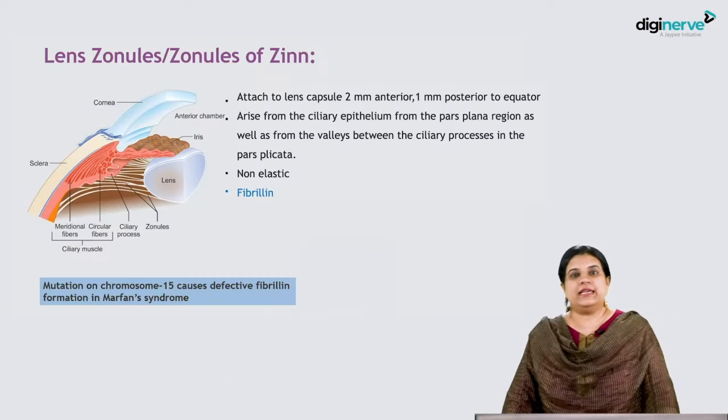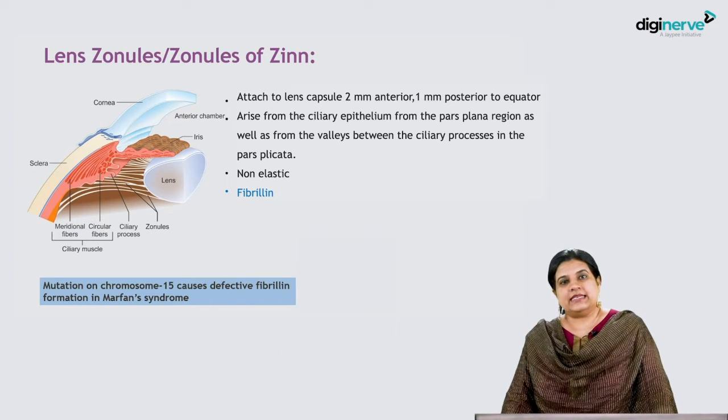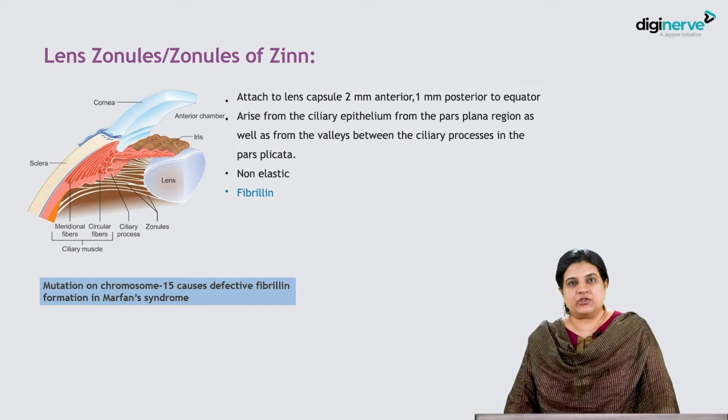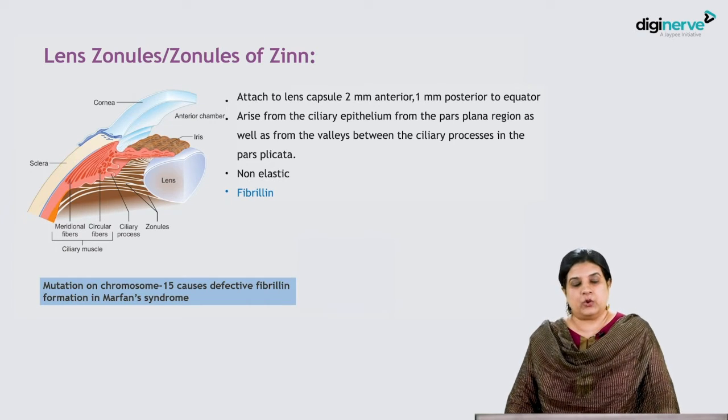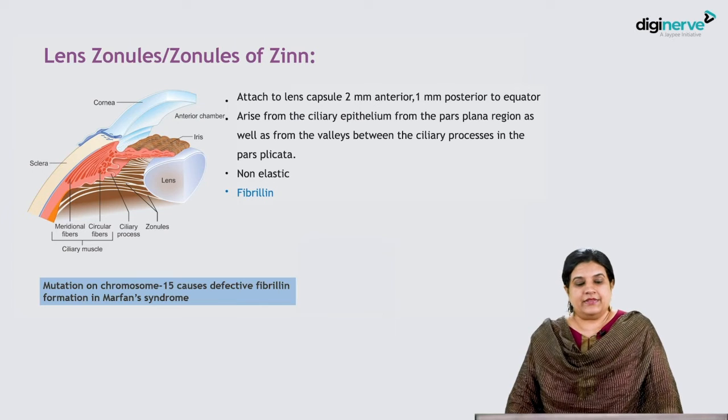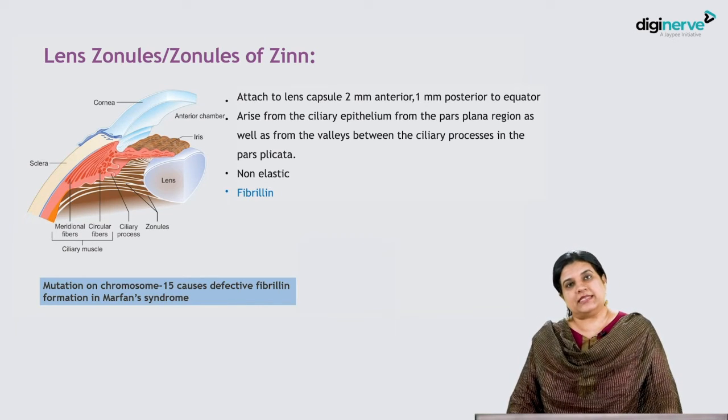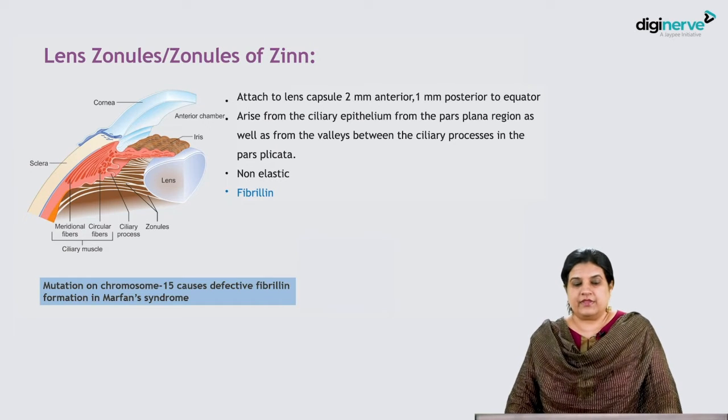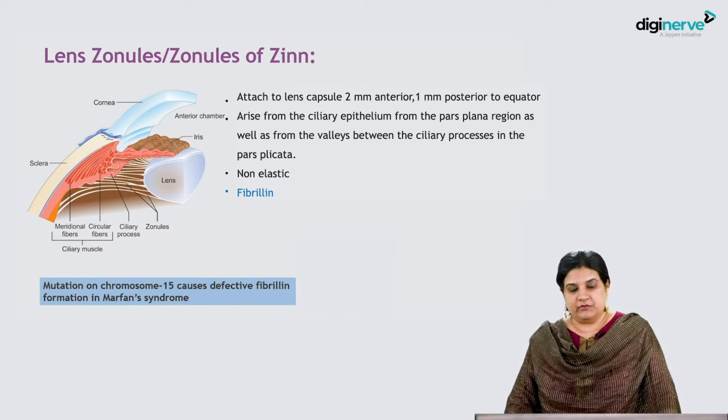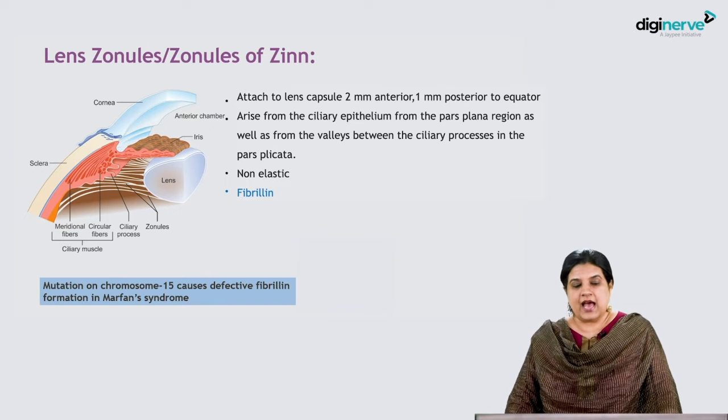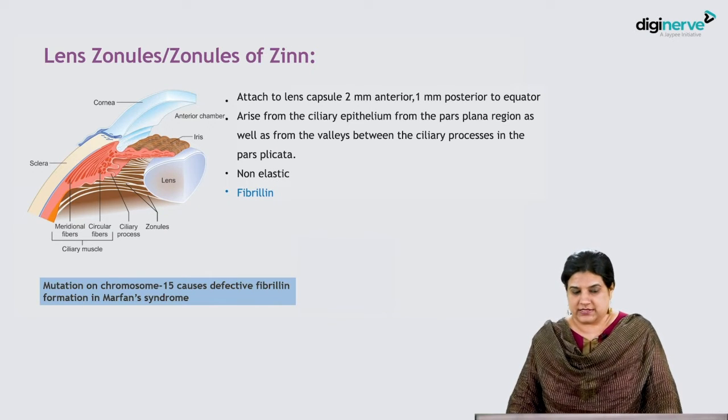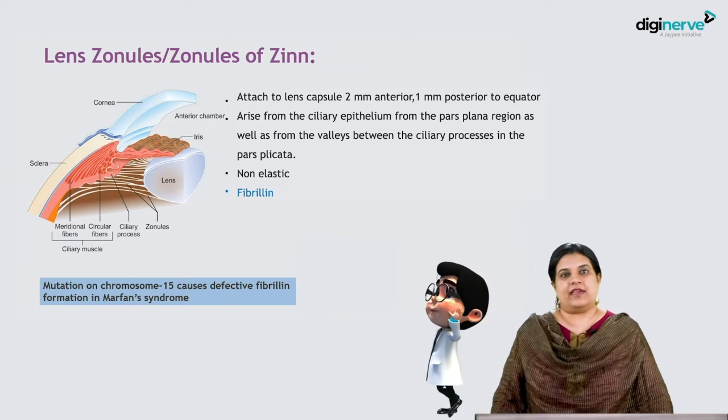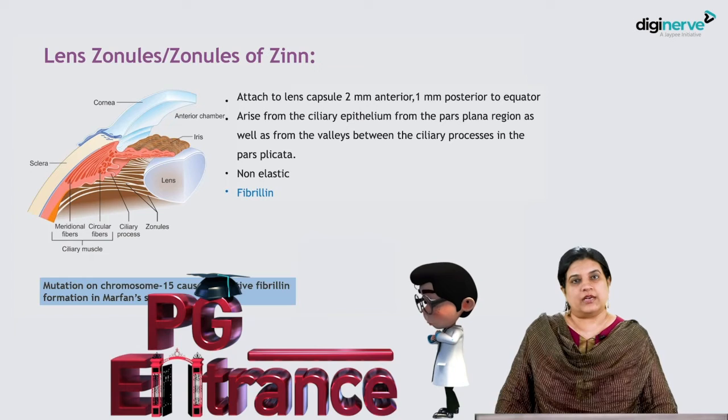The lens is suspended by zonules attached 360 degrees at the equator. They attach to the lens capsule 2 millimeters anterior and 1 millimeter posterior to the equator. They arise from the ciliary epithelium and the valleys between ciliary processes. These lens zonules are non-elastic and made of fibrillin.